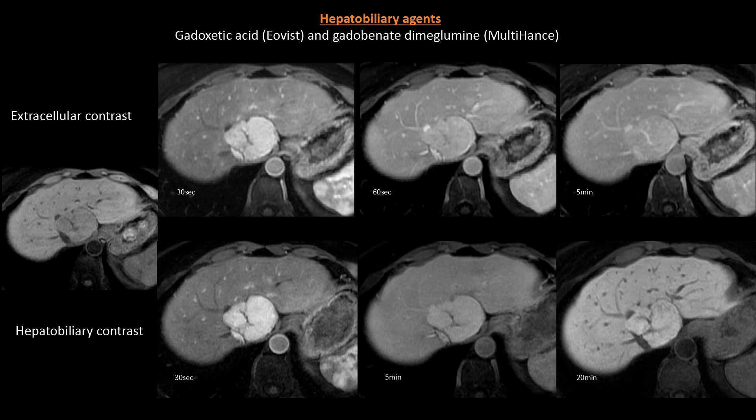Hepatobiliary agents are useful for diagnosis of focal nodular hyperplasia, as this tumor contains functioning hepatocytes and shows retained contrast in the hepatobiliary phase. Other lesions such as cysts, metastases, hemangioma, adenoma, and HCC do not contain functioning hepatocytes and will therefore appear hypo-enhancing relative to the liver parenchyma in the hepatobiliary phase.